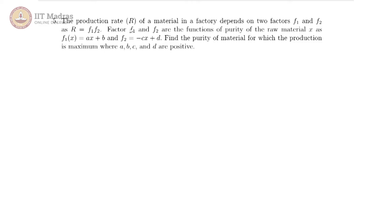Our fifth problem looks a little complicated, but let us go one by one. Here we have the production rate of a material which is being made in a factory, and it depends on two factors f1 and f2 as r equals f1 times f2. These two factors are functions of the purity of the raw material, and that variable is x. x is the purity of the raw material, and both these functions are given to be linear.